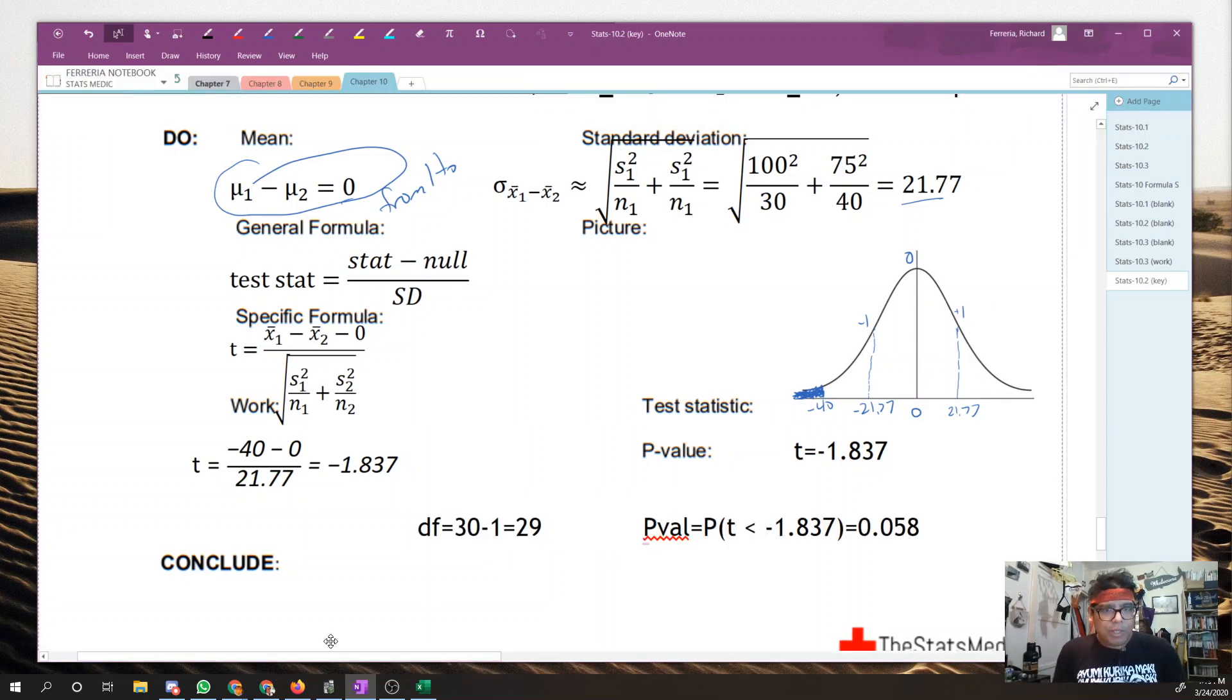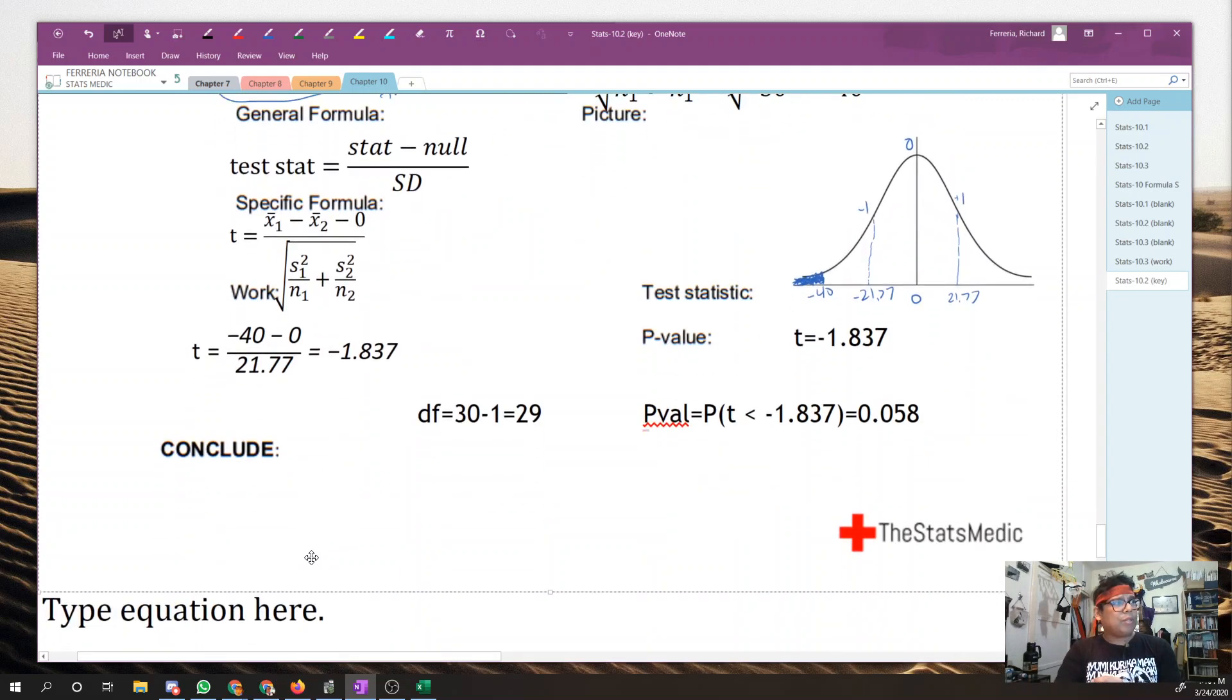So we're getting a p-value of 0.058, which is somewhat bigger than our significance level. So I think we're going to fail to reject our null hypothesis here, which means we're ready to go ahead with our conclusion. Go ahead and write that up.